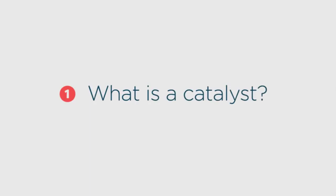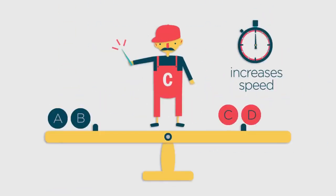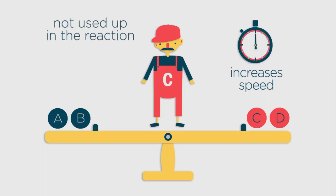Firstly, what is a catalyst? A catalyst is something which speeds up a chemical reaction, but at the end of the reaction has the same mass as it had at the beginning of the reaction. This means that it is not used up in the reaction.